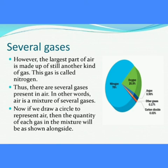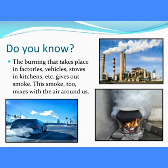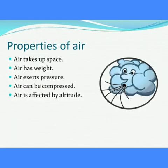If we draw a circle to represent air, then the quantity of each gas in the mixture will be as shown alongside. The burning that takes place in factories, vehicles, towers and kitchens gives out smoke. This smoke too mixes with the air around us.